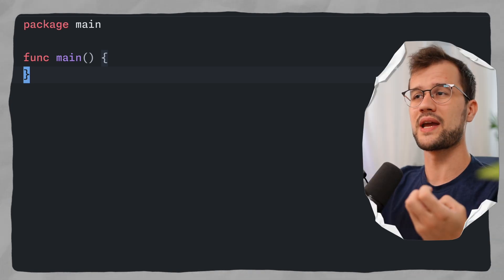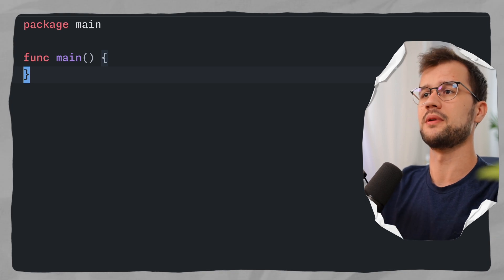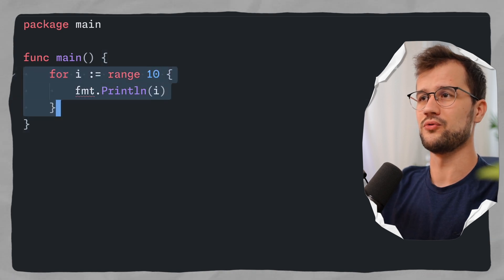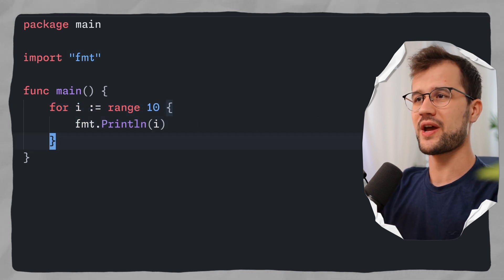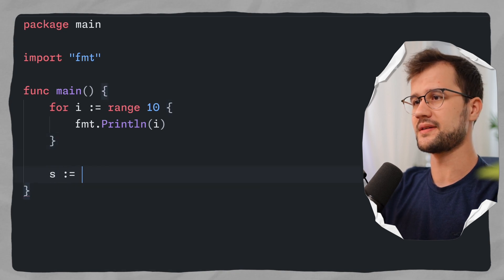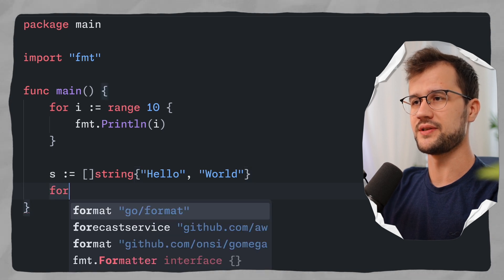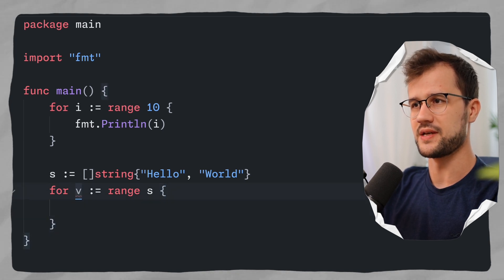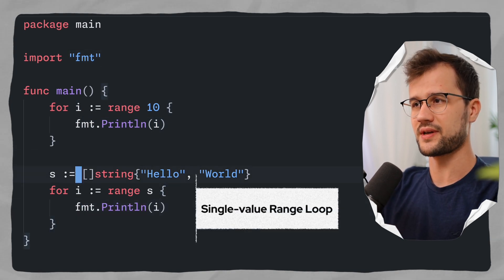Before Go 1.23, there were mainly three ways to iterate over things. The first one is simple loop counting — just looping over a specific range, the normal for loop, which prints numbers from 0 to 9. Then we have the simple slice loop. If we declare a simple slice of type string, we can iterate over the values using range, where v would be the index — so let's change v to i and print it. This would only print the index, in this case 0 and 1.